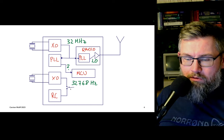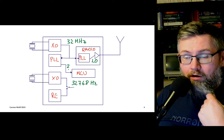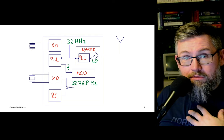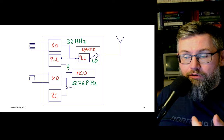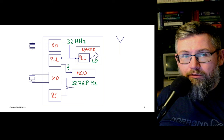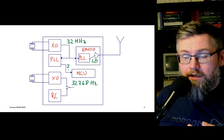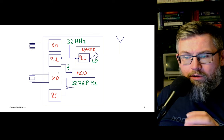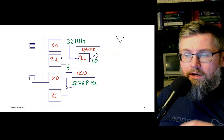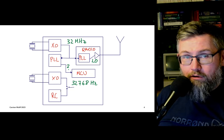It is also possible to make RC oscillators that are reasonably accurate, because sometimes these crystals cost money, and if you don't need that accurate a timing reference for the real-time clock, you can make do with an internal RC oscillator. We'll go into more details on crystal oscillators and RC oscillators next time, but the topic for today is phase-locked loops.